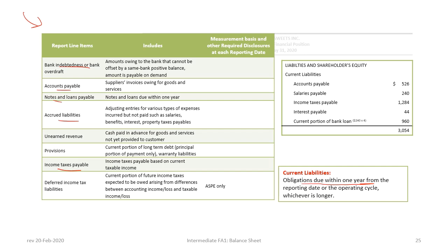The only difference between ASPE and IFRS for current liabilities is deferred income tax: under ASPE current portions are presented as current, whereas under IFRS all deferred tax items are classified as long-term. Before continuing, please make sure you are able to reconcile the numbers in current liabilities and review examples of items that would be included for future examples.